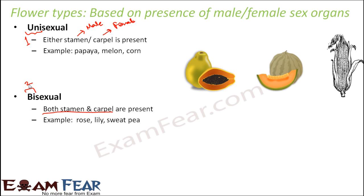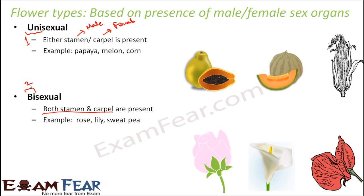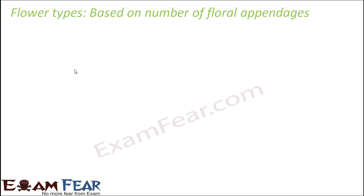Flowers which have both stamen and carpel are called bisexual — the term 'bi' means two. Examples of bisexual flowers include rose, lily, and sweet pea. If you observe a papaya flower and compare it with a rose flower, you will find that rose has both carpel and stamen, but papaya does not.